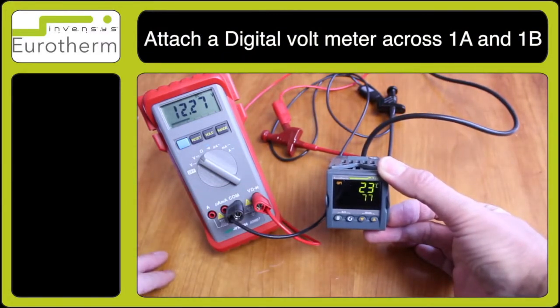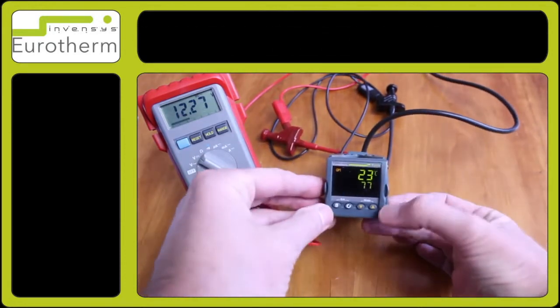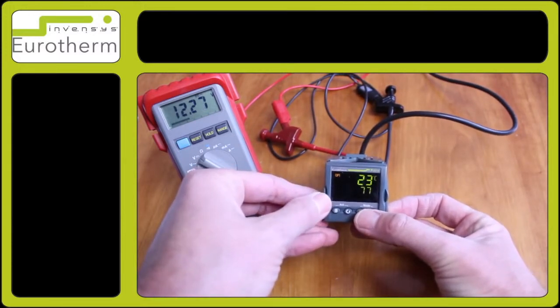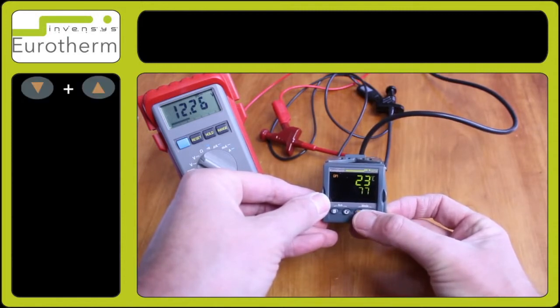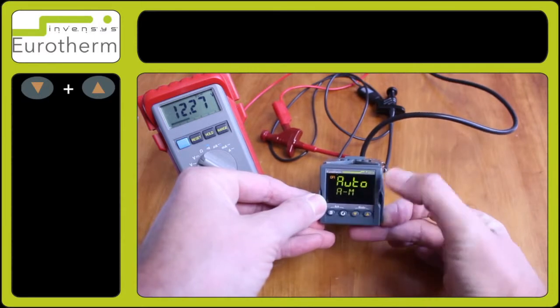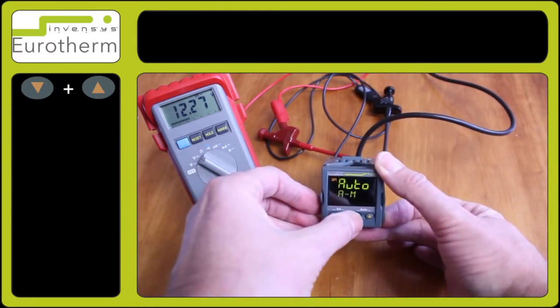Then back to the instrument you will require to replace the unit into manual mode. To do this press the up and down arrow keys together, observe auto dash M, now select man with one of the arrow keys.